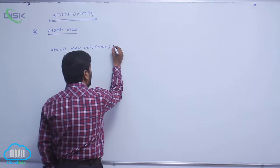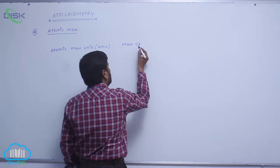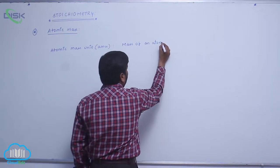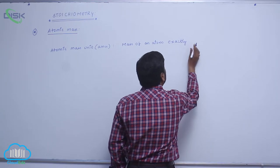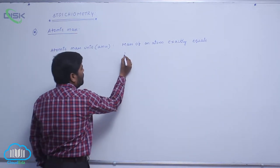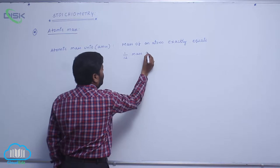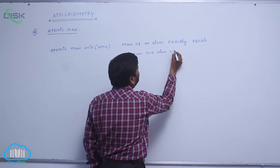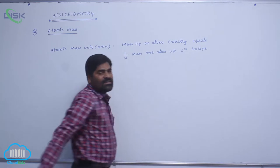So, it may be defined as the mass of an atom exactly equal to 1 by twelfth the mass of one atom of C-12 isotope. This is known as 1 amu.